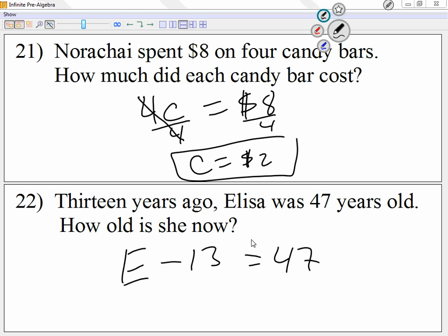So the way I'm going to solve for this, separate it through the equal sign, my minus 13 is by itself, so I'm going to move it to the other side as a plus 13. So E is equal to 60, right? 47 plus 13 is 60. So she's 60 years old. And yeah, 13 years ago, she was 47.